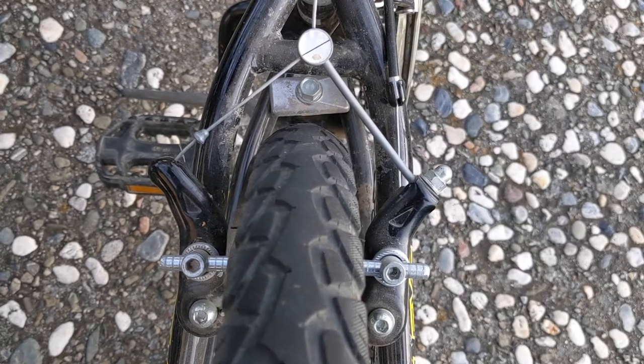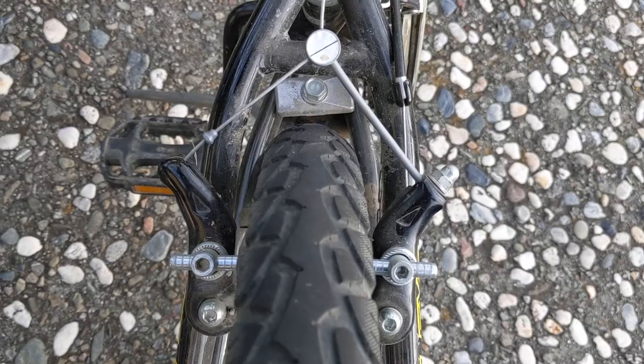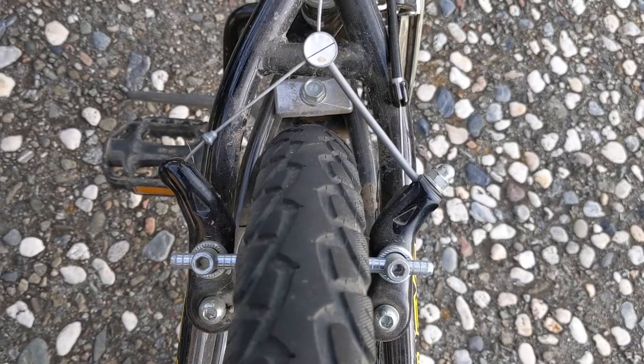A cantilever brake is a type of bicycle brake in which when the main cable is pulled, a straddle cable pulls the two arms of the brake inwards.